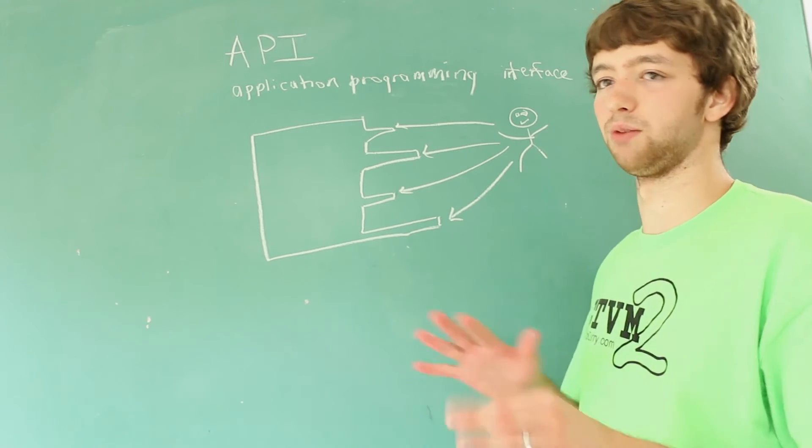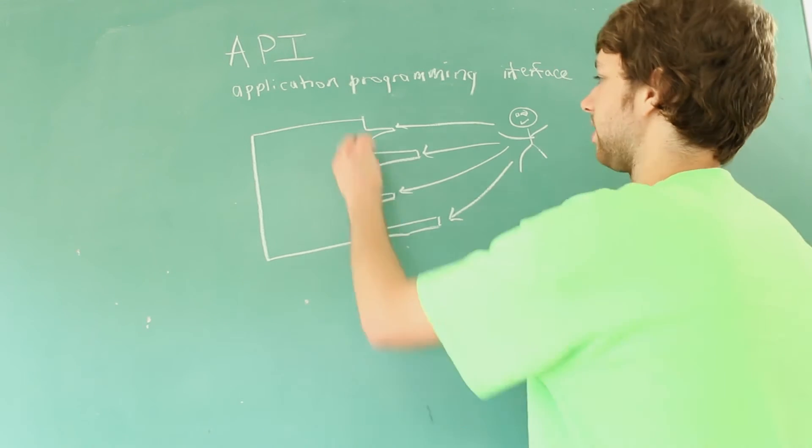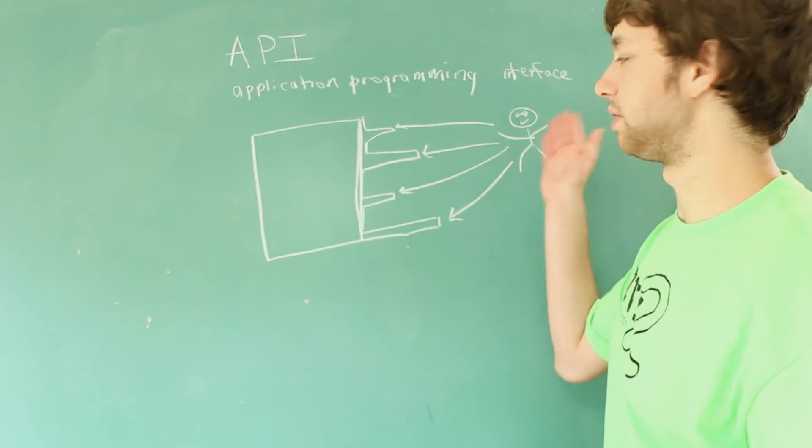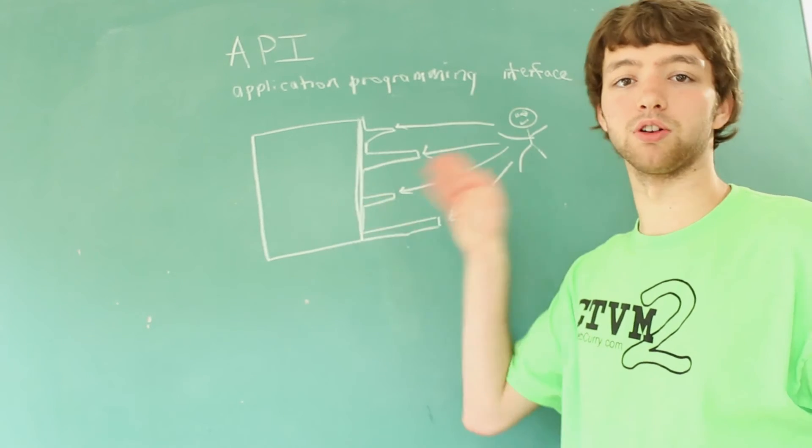And this is like very basic explanation and the way you apply an API in different situations is going to be different. But you can think of it as this extra layer that you add on to your software that allows people to communicate with certain parts of your application.